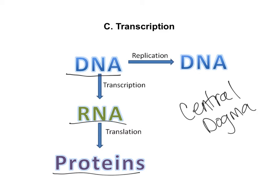We'll see today that this process of making protein is divided into two steps. The first one is transcription, and the second one is translation. In transcription, we'll go from DNA to RNA. All of the instructions for what makes you you, including all of the instructions for making the proteins that help your body function, are in DNA. So during transcription, we'll be making a message of what the DNA's instructions are in the form of RNA. And then in translation, we'll be translating that RNA message into actual protein and assembling protein molecules.